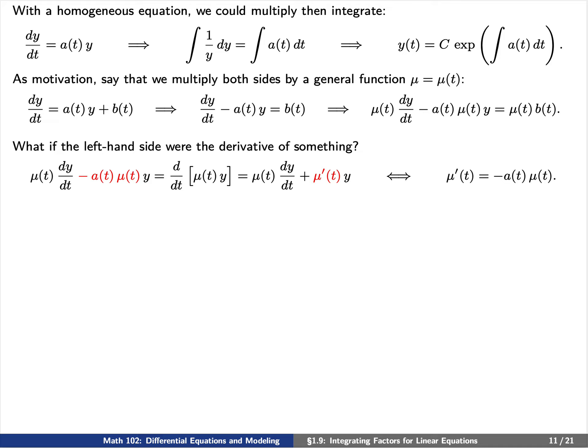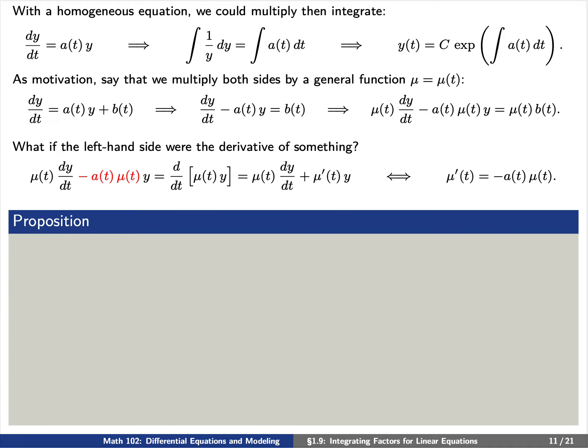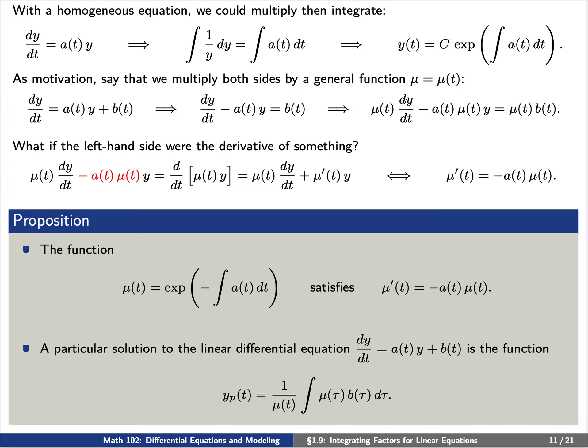Then by using the product rule, we would find that mu of t must satisfy mu-prime equals negative a of t times mu. Here is our main proposition for today. The function mu of t, which is the exponential of negative the integral of a of t dt, satisfies the equation mu-prime equals negative a of t times mu. A particular solution to the non-homogeneous differential equation dy/dt equals a of t times y plus b of t is the function y_p equals 1 over mu of t times the integral of mu of tau times b of tau d tau.